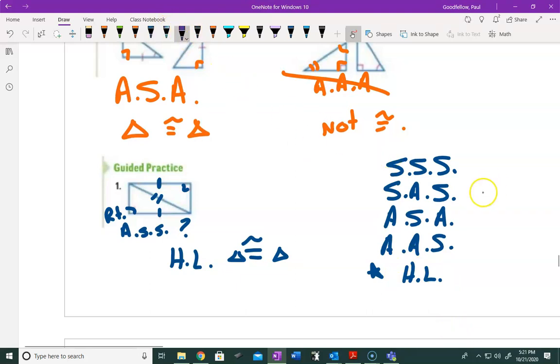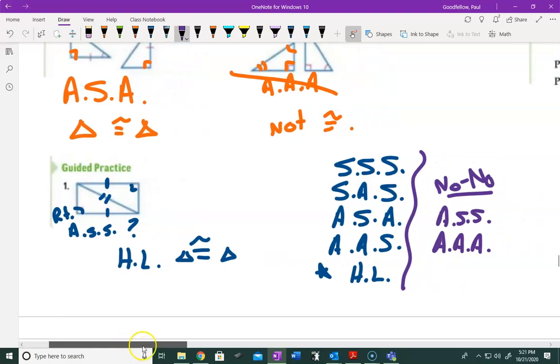You really have, in your repertoire, five shortcuts that you can use. Side-side-side works. Side-angle-side works. Angle-side-angle works. Angle-angle-side and the very special HL, which only applies to right triangles. Now, the ones that don't work, that are no-nos, is angle-side-side in any other normal triangle or AAA. These are ones that you cannot use.